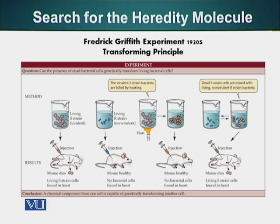In the 1920s, people knew that genetic information was contained on the chromosome. However, chromosomes are made up of two types of polymers: proteins and DNA. At that time, people used to think that DNA, since it is made up of four monomer units, would lack the complexity to carry genetic information from one generation to the next. Many people favored proteins as the genetic or heredity molecule.